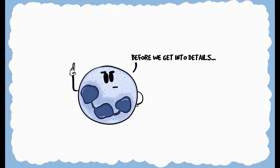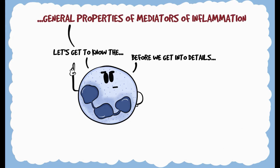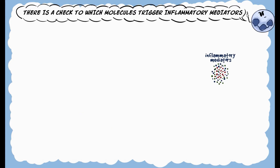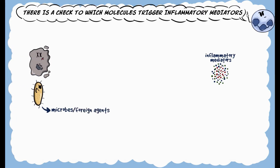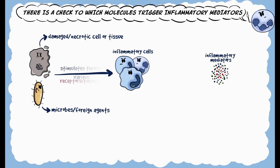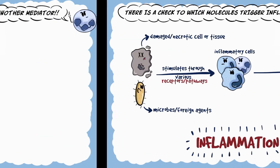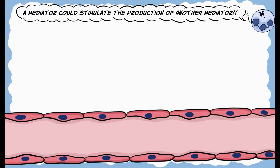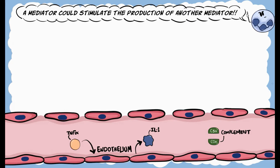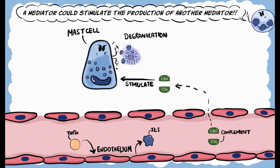Before we get into the details of these mediators of inflammation, let's get to know some of their properties. Chemical mediators of inflammation are only stimulated by factors like microbes, foreign agents, damaged and necrotic tissue — molecules that can trigger inflammation through various receptors and other pathways. This way there is always a check to which molecules trigger inflammation. A chemical mediator could also stimulate the production or release of another mediator. A common example would be pro-inflammatory cytokine tumor necrosis factor alpha acting on the endothelium, which in turn produces cytokine interleukin-1. Also, complement proteins like C3A and C5A could stimulate mast cells to degranulate and release histamine.